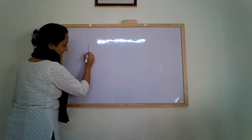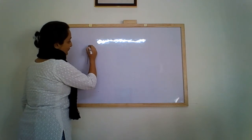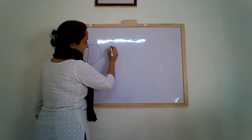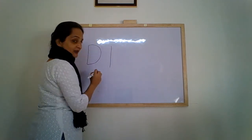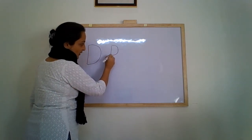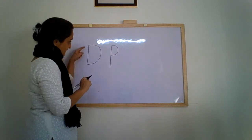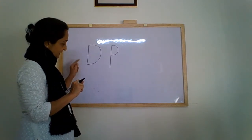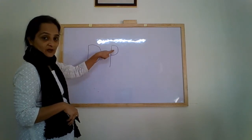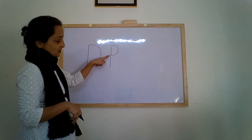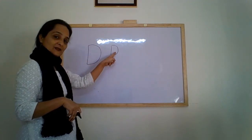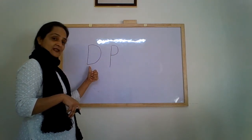Standing line with a forward curve is letter D. Standing line with a small forward curve is letter P. Children, do you see the difference? For D, the forward curve starts from the top of the standing line and finishes at the bottom. For P, the forward curve starts at the top but finishes in the middle. So this is a big forward curve for D, and a small forward curve for P.